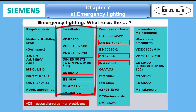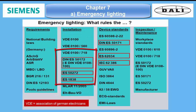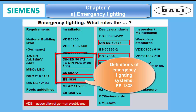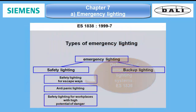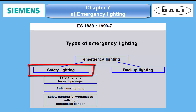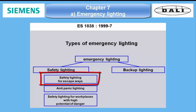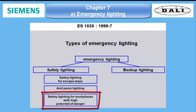The installation standards need to be heeded. With the European standards EN 51.72, EN 52.72, and EN 18.38, we have three standards which apply here among others. The definitions of emergency lighting systems are to be found in EN 18.38. When we talk about our DALI gateways, we talk about safety lighting, which can be safety lighting for escapeways, anti-panic lighting, and safety lighting for workplaces with high potential of danger.